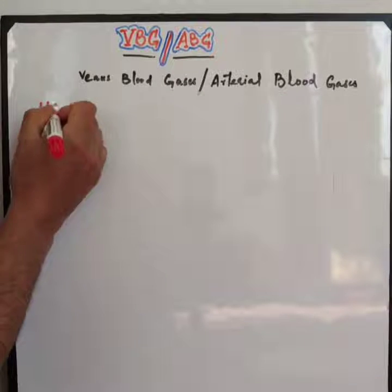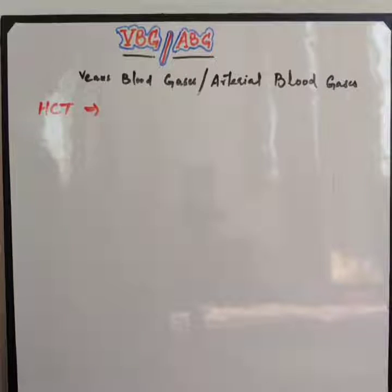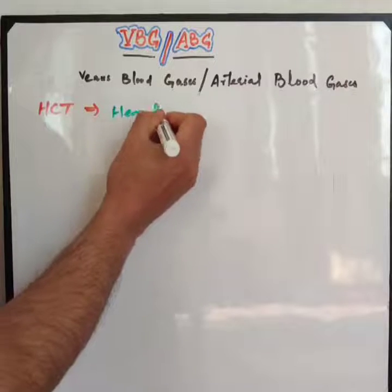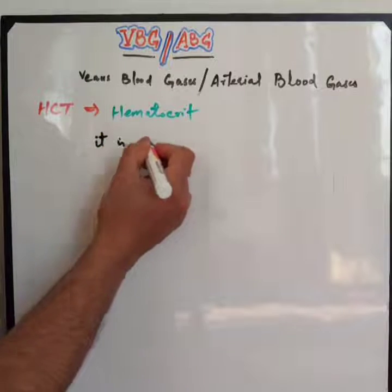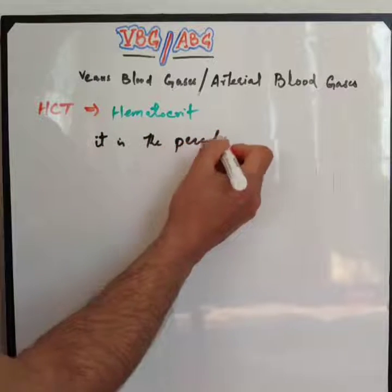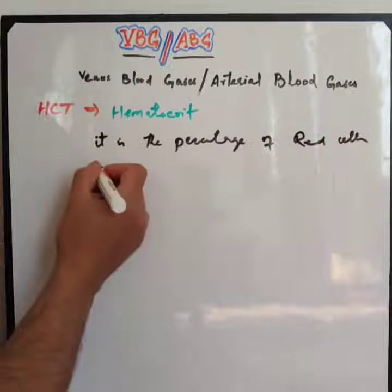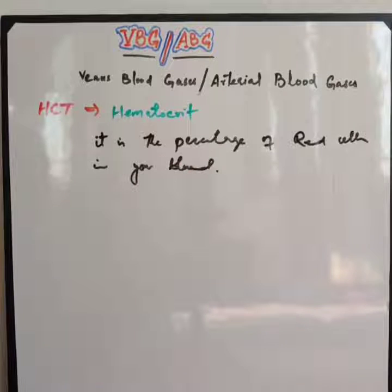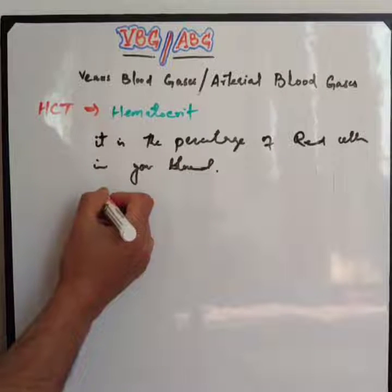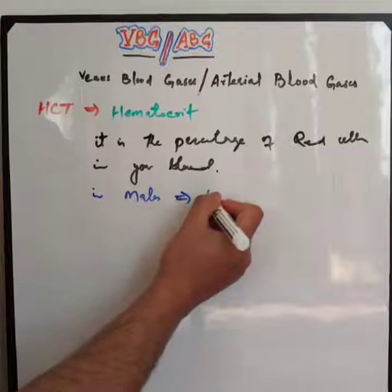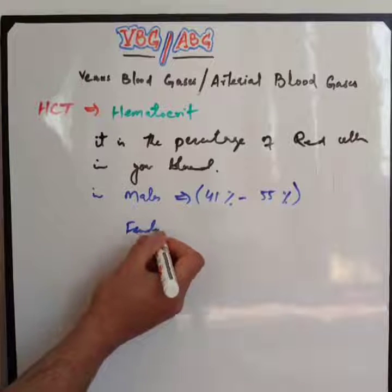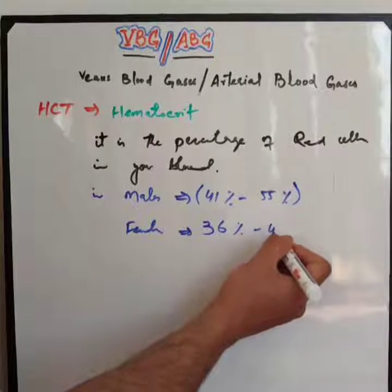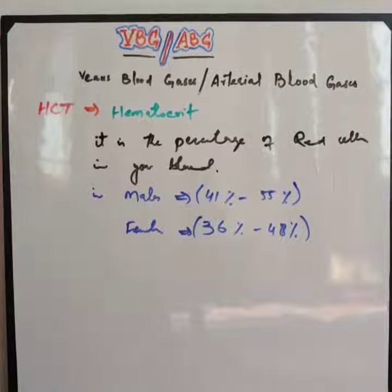Let's move to HCT, hematocrit. Hematocrit is the percentage of red blood cells in your body. The normal value of HCT for males is 41 to 55 percent, and for females it is 36 to 48 percent. In the next video, we will show how this test is done. Thank you for watching.